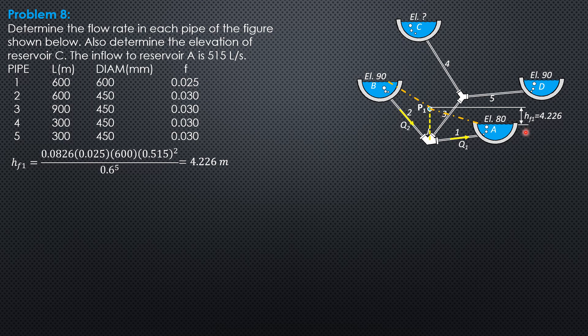80 plus 4.226 is 84.226. So 90 minus 84.226, that's 5.774. That's the head loss in pipe 2.